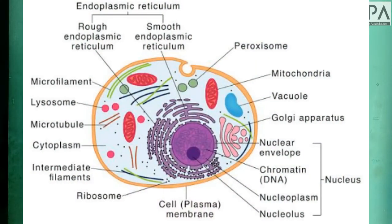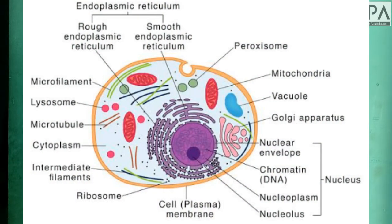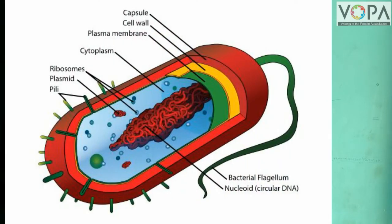Such a cell type is found in prokaryotic cells. In these cells, cytoplasm, plasma membrane, and nucleoid are the main components. Such types of cells are called prokaryotic cells.